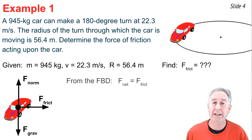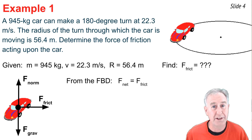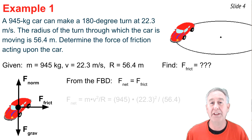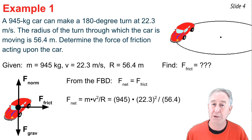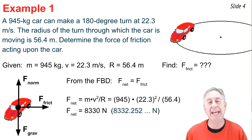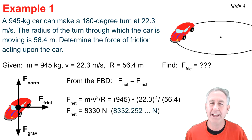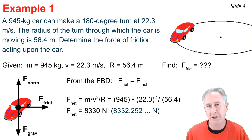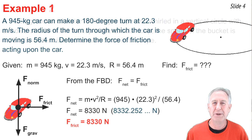From the free body diagram, the only unbalanced force is friction — that's the net force. And since F_net = mv² / r, and I know m, v, and r, I can calculate the net force. It comes out to be 8,330 newtons. Since F_net equals F_friction, I've solved the problem.